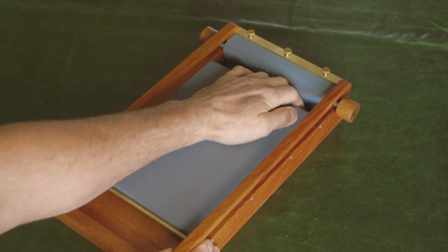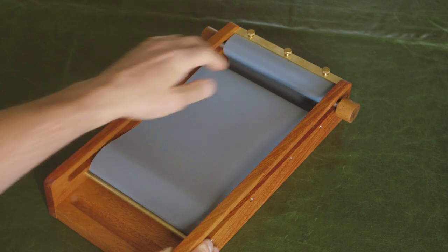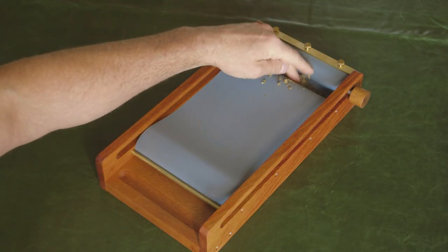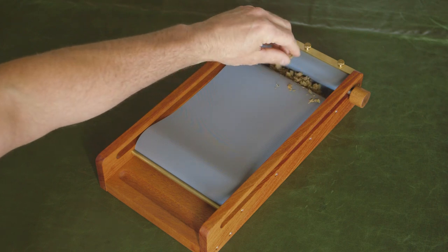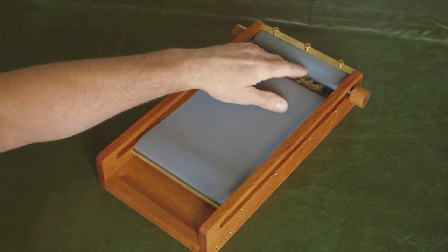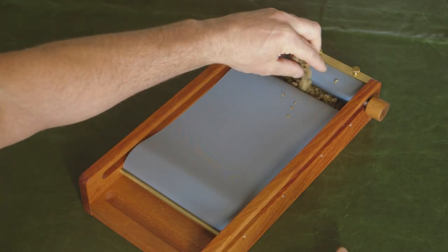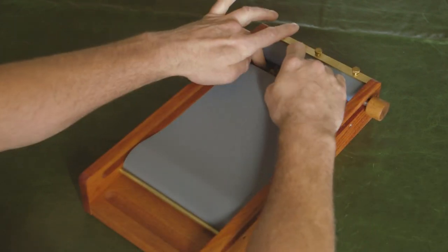To begin rolling, make sure the rod is to the back and the pocket of the cloth is in front of the rod. Evenly add whole leaf tobacco or ground cannabis to the pocket and lightly tamp it down. A little practice and you'll figure out how much to add.